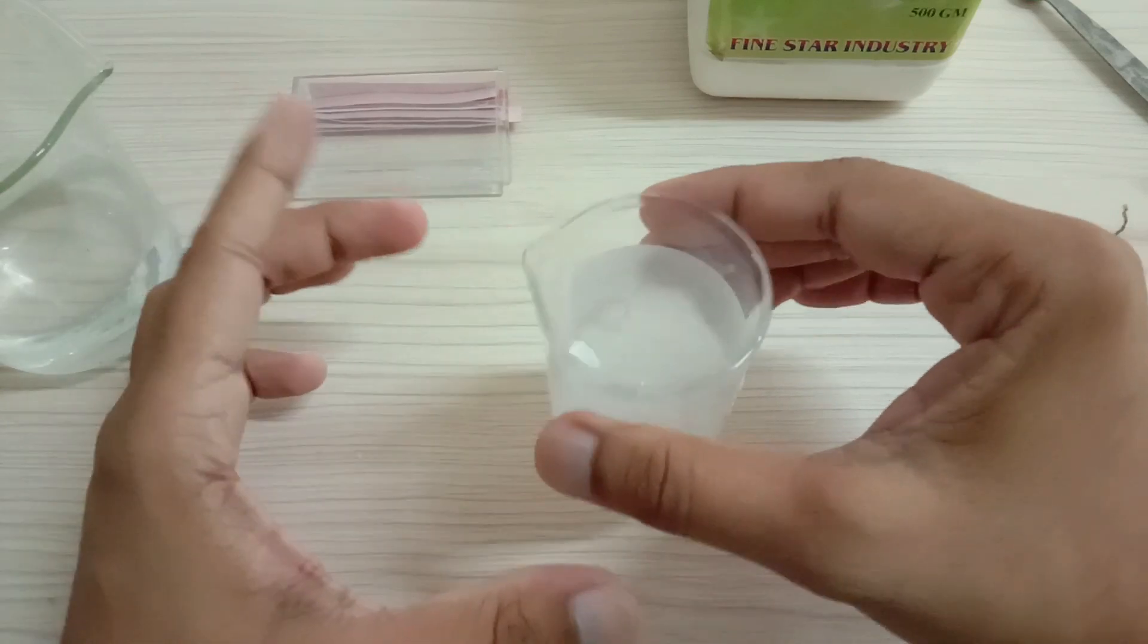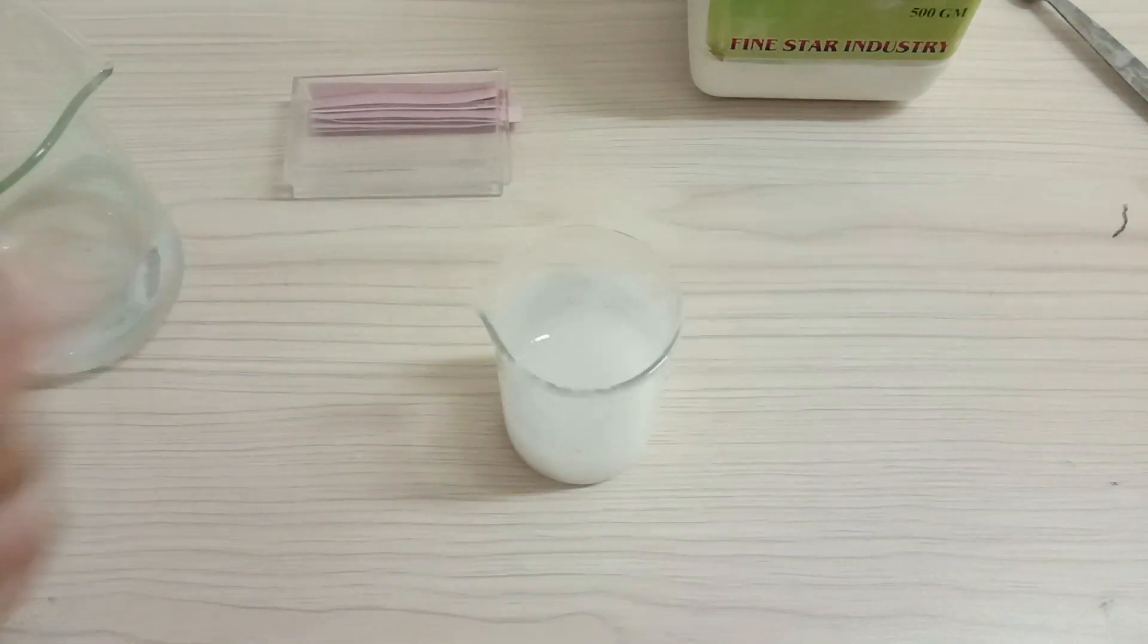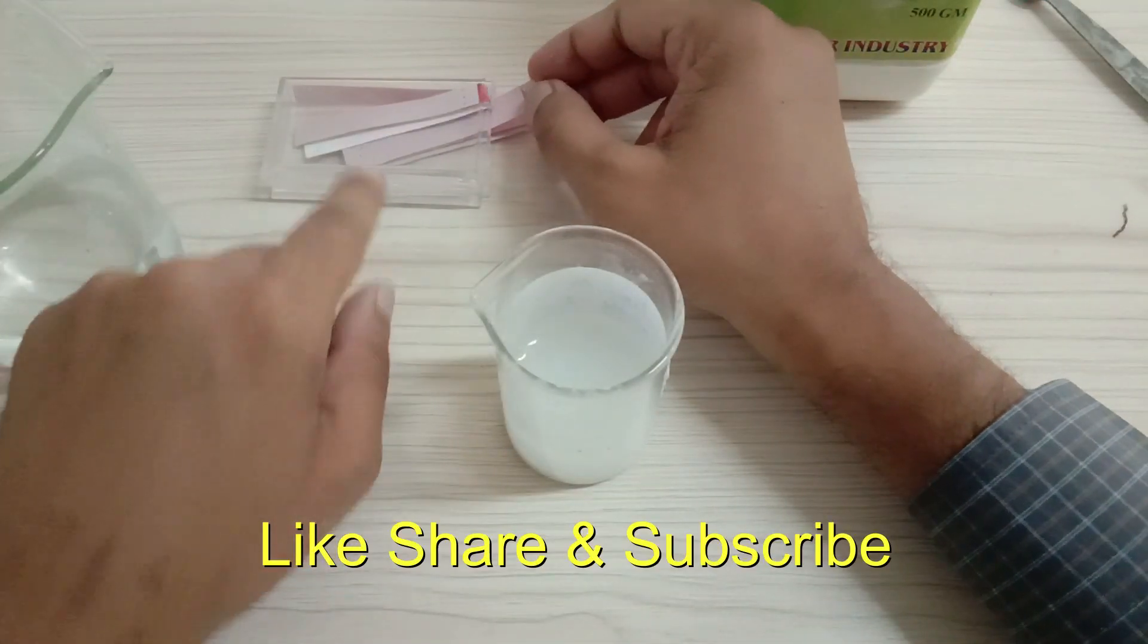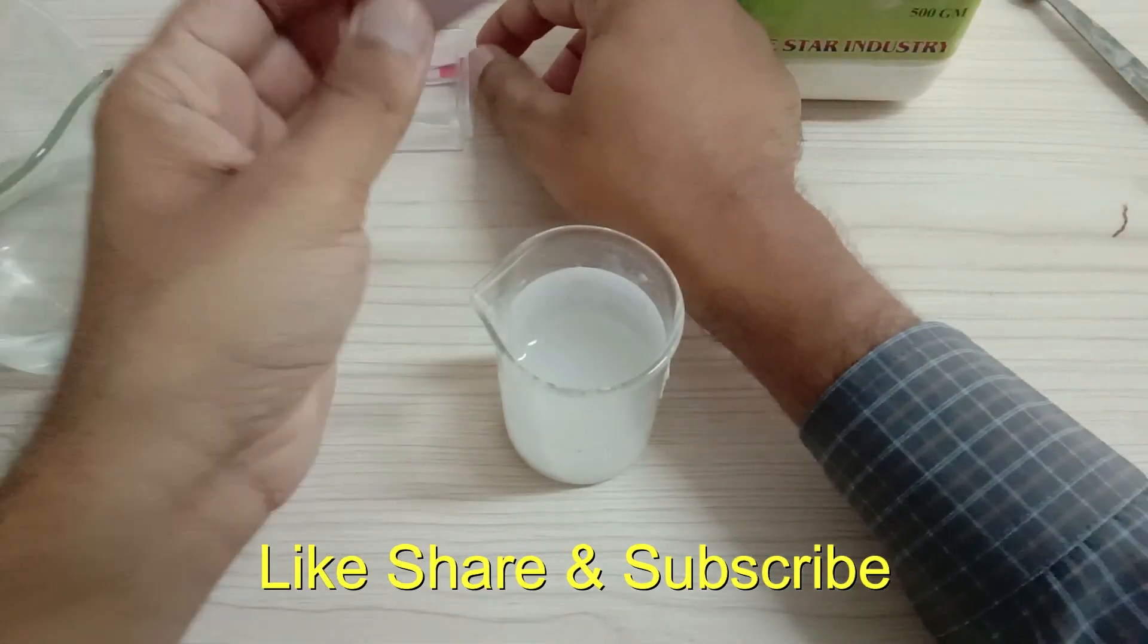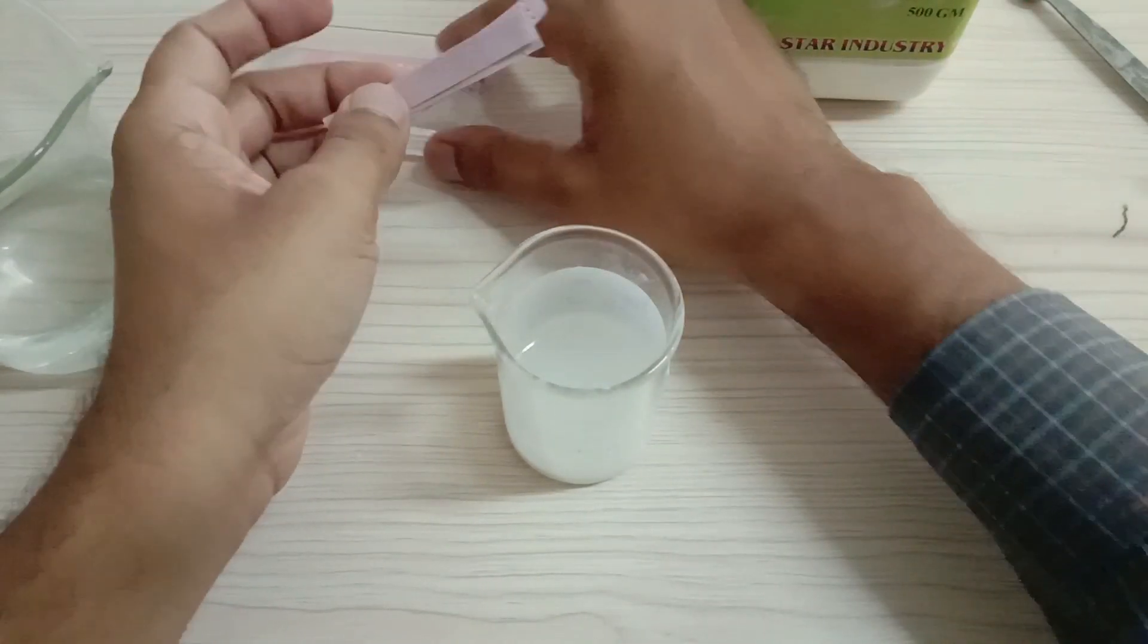Now I will wait because calcium oxide is not fully soluble in water and it takes time to dissolve. But meanwhile, what I can show you is this red litmus paper, which is used to check the presence of the base.